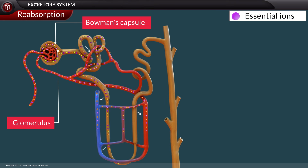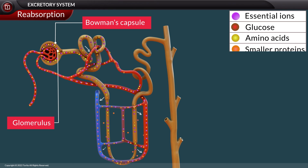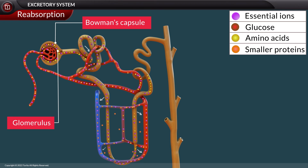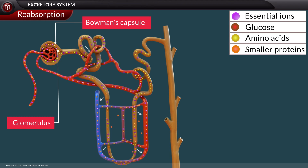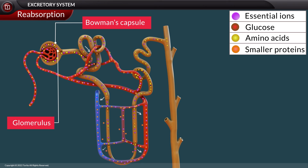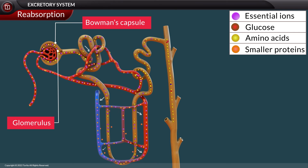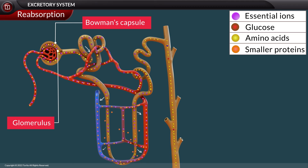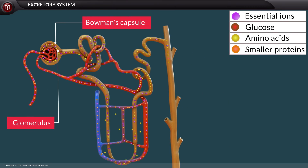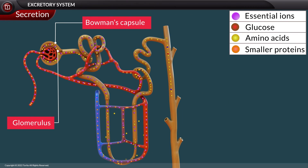The second step is reabsorption. After glomerular filtration, the resulting filtrate contains waste and other substances the body needs, like essential ions, glucose, amino acids, and smaller proteins. When the filtrate exits the glomerulus, it flows into a duct called the renal tubule. As it moves through the tubules, useful substances and some water are reabsorbed through the tube wall into the adjacent capillaries.